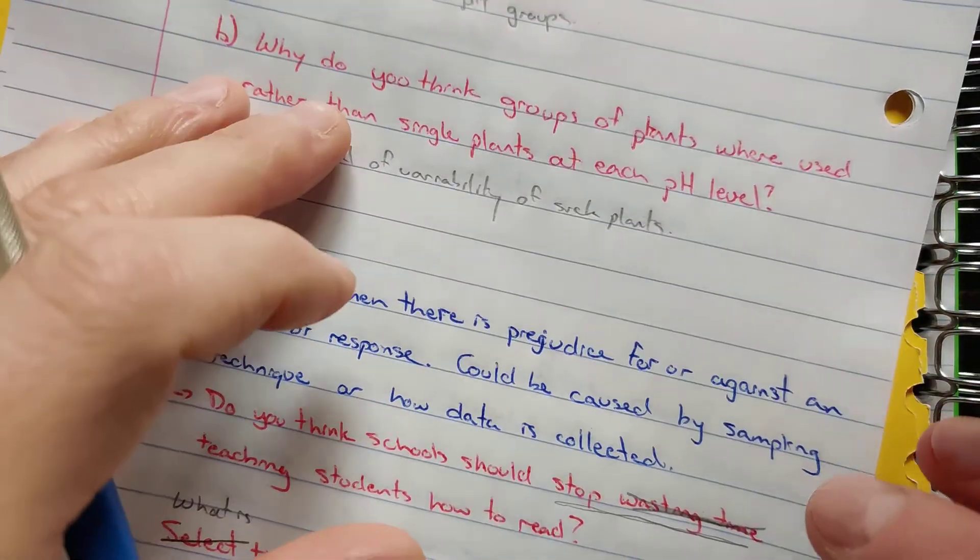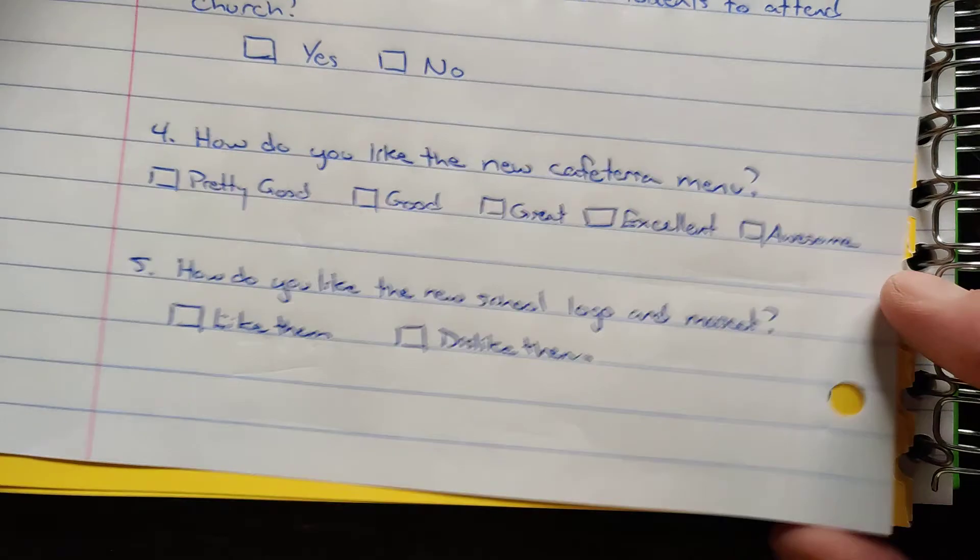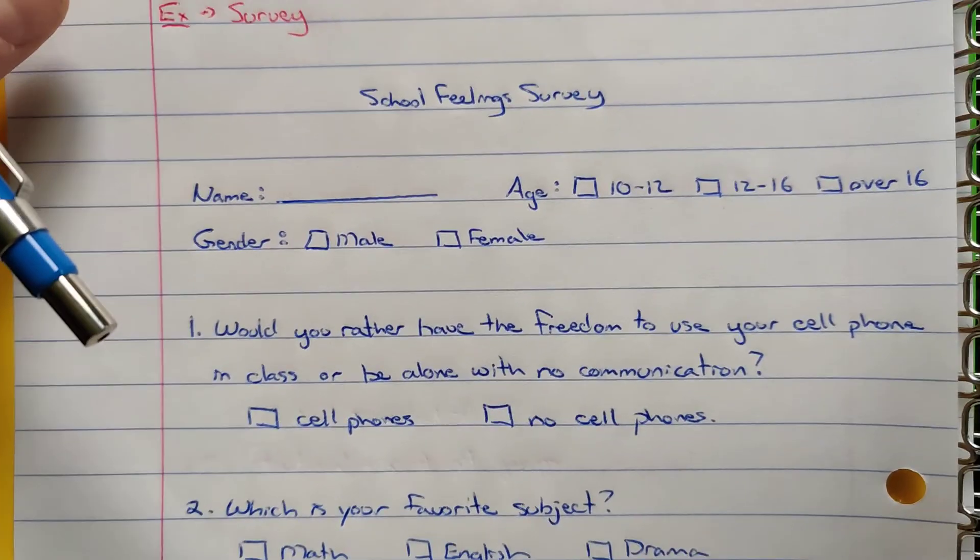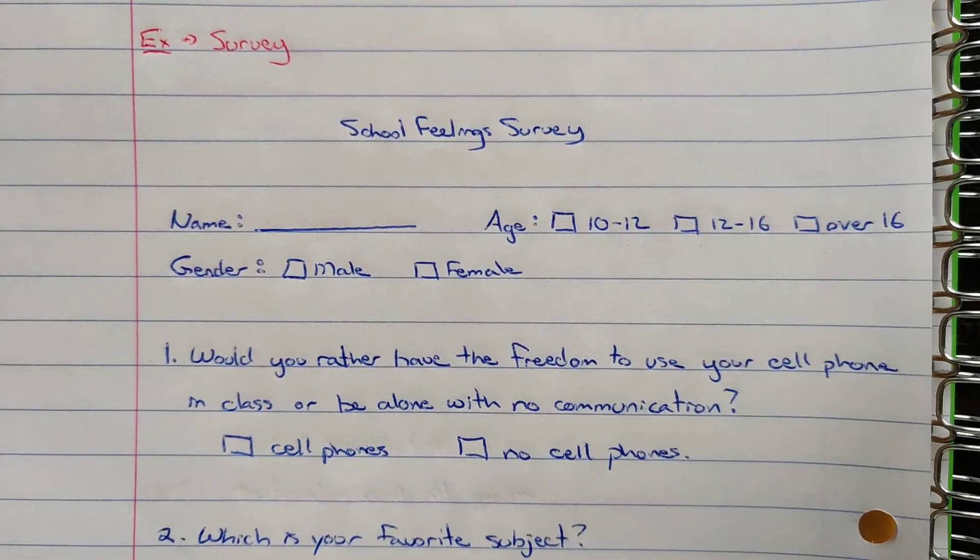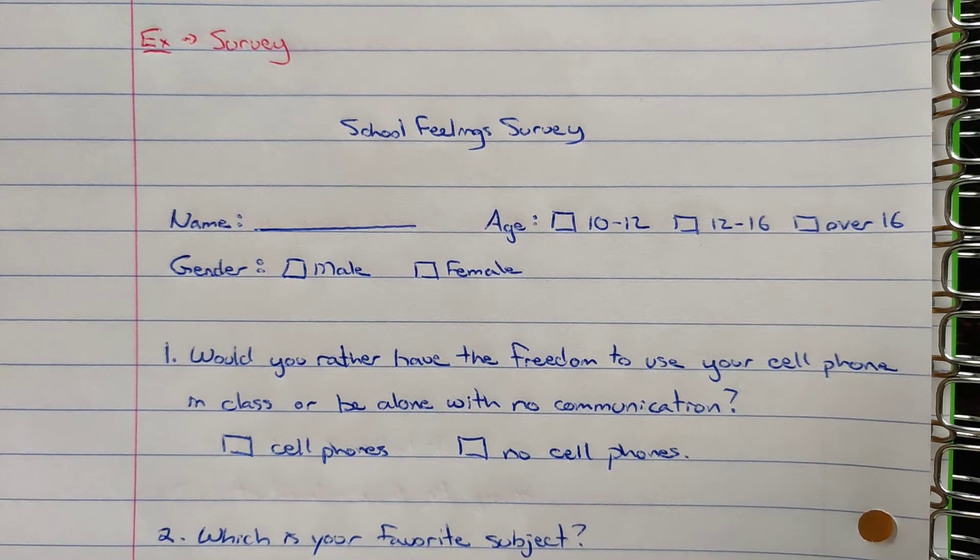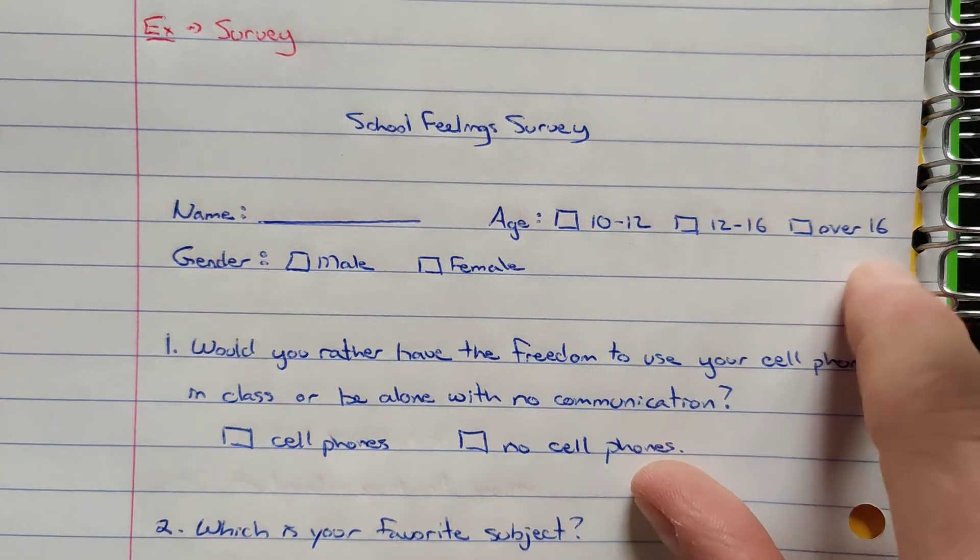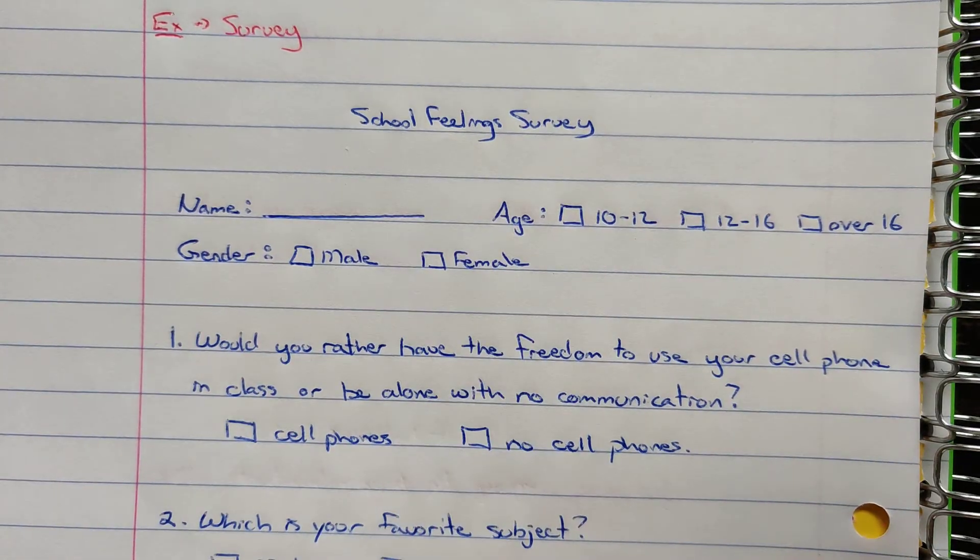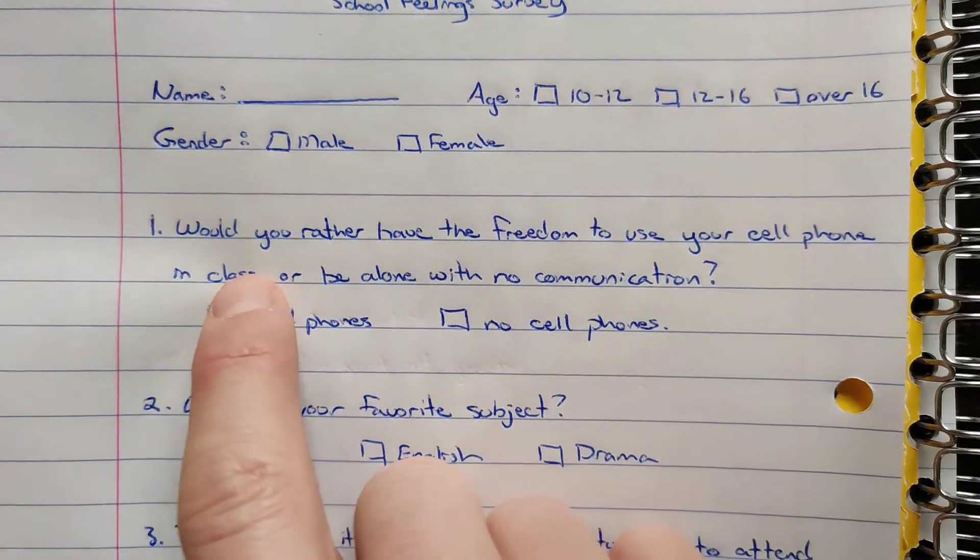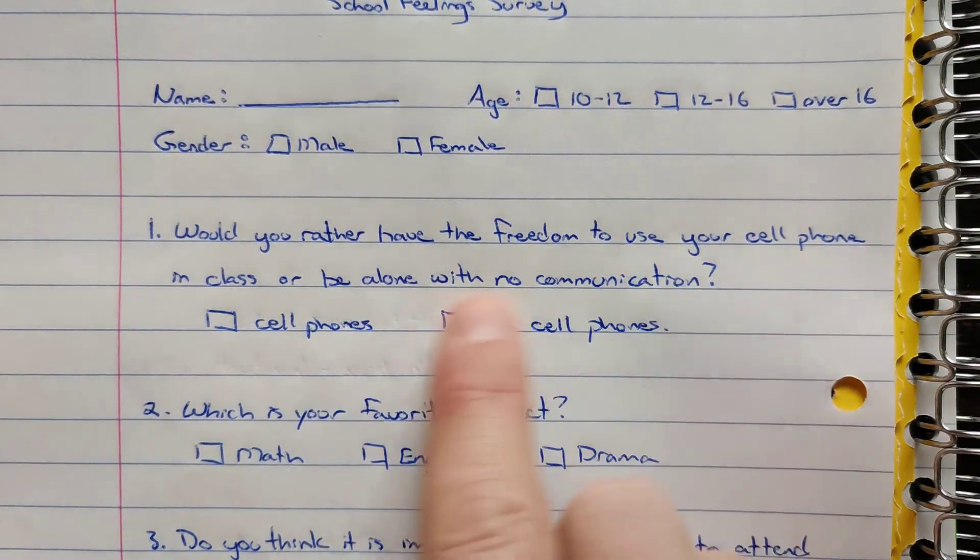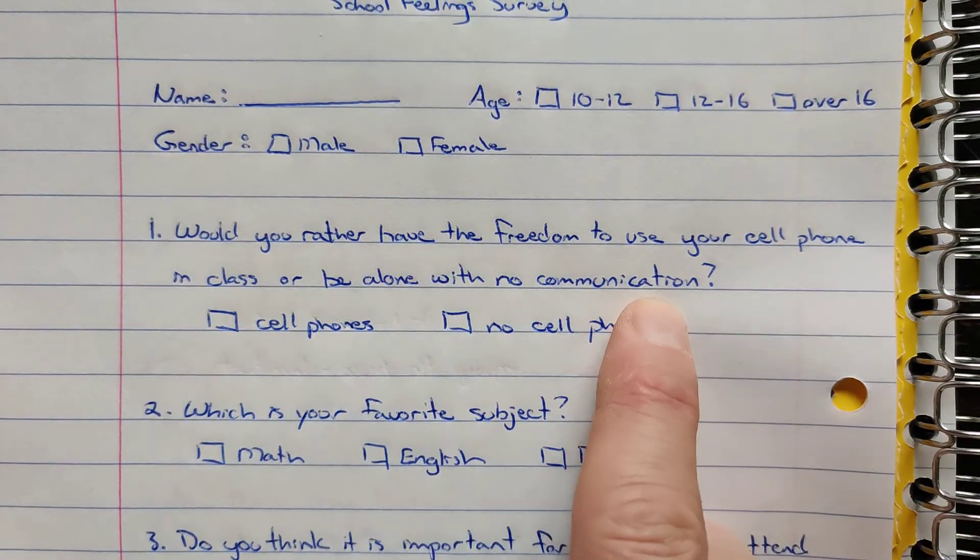If we take a look now at a survey here, we have a survey and then we're going to analyze it for any concerns. So this is a school feeling survey. We're asking for the name, we got some ages and the age ranges here, the person's gender. And then first question, would you rather have the freedom to use your cell phone in class or be alone with no communication?